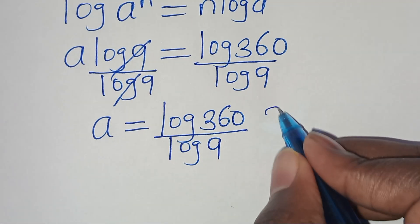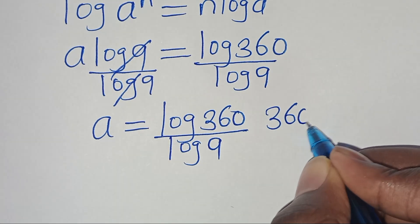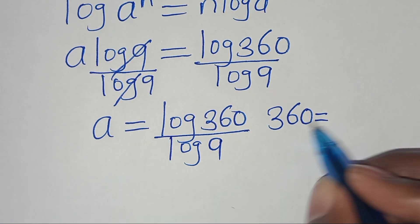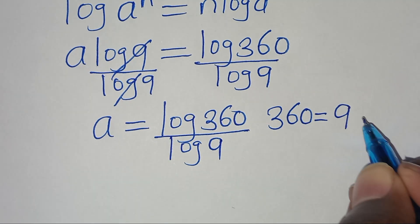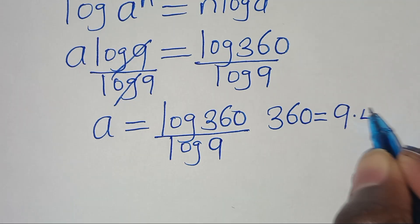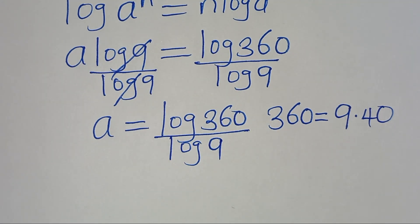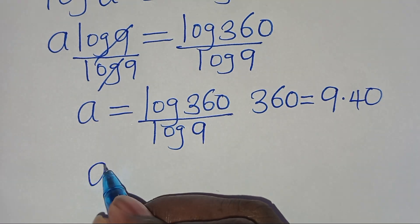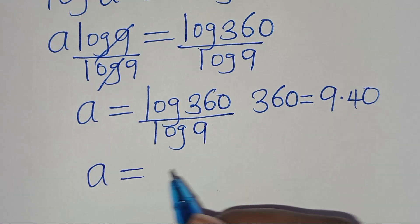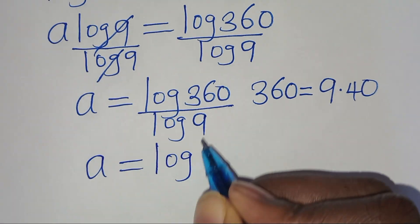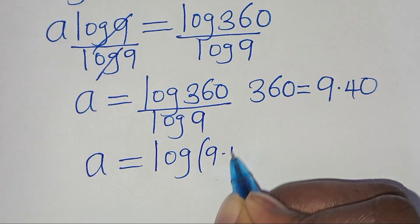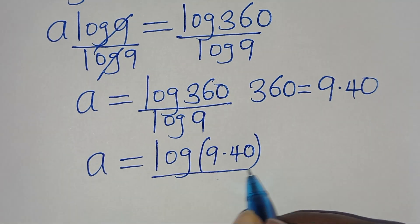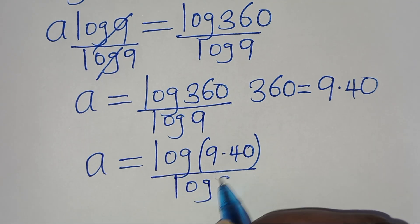Now we can express 360 basically as 9 multiplied by 40. So substituting this, then we have a is equal to log(9 times 40), then divided by log 9.